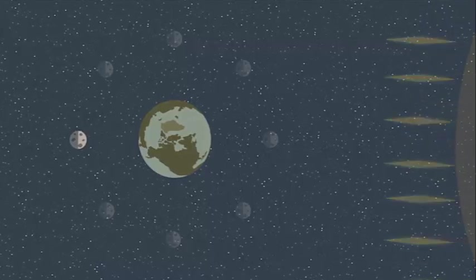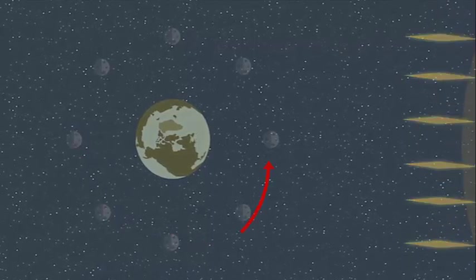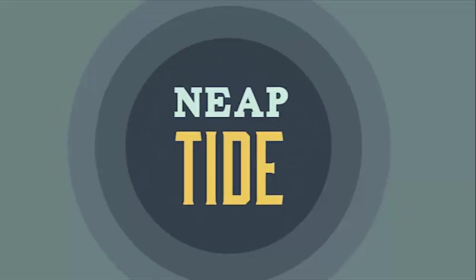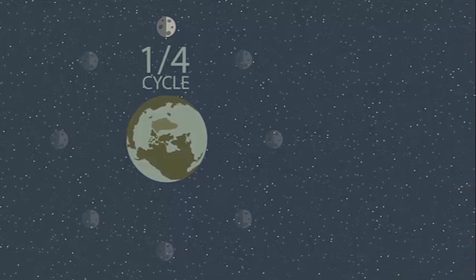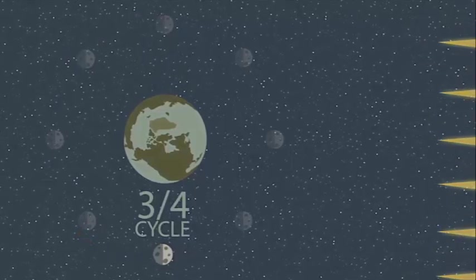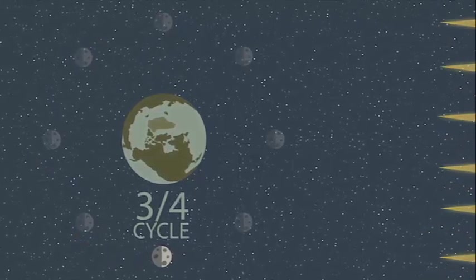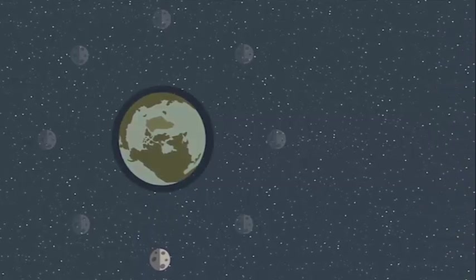Neap tides take place when the moon and the sun are at 90 degree angles to each other during a quarter or three-quarter moon. The ocean water is pulled in two different directions when the sun and moon are in these positions, so the tides aren't as extreme.